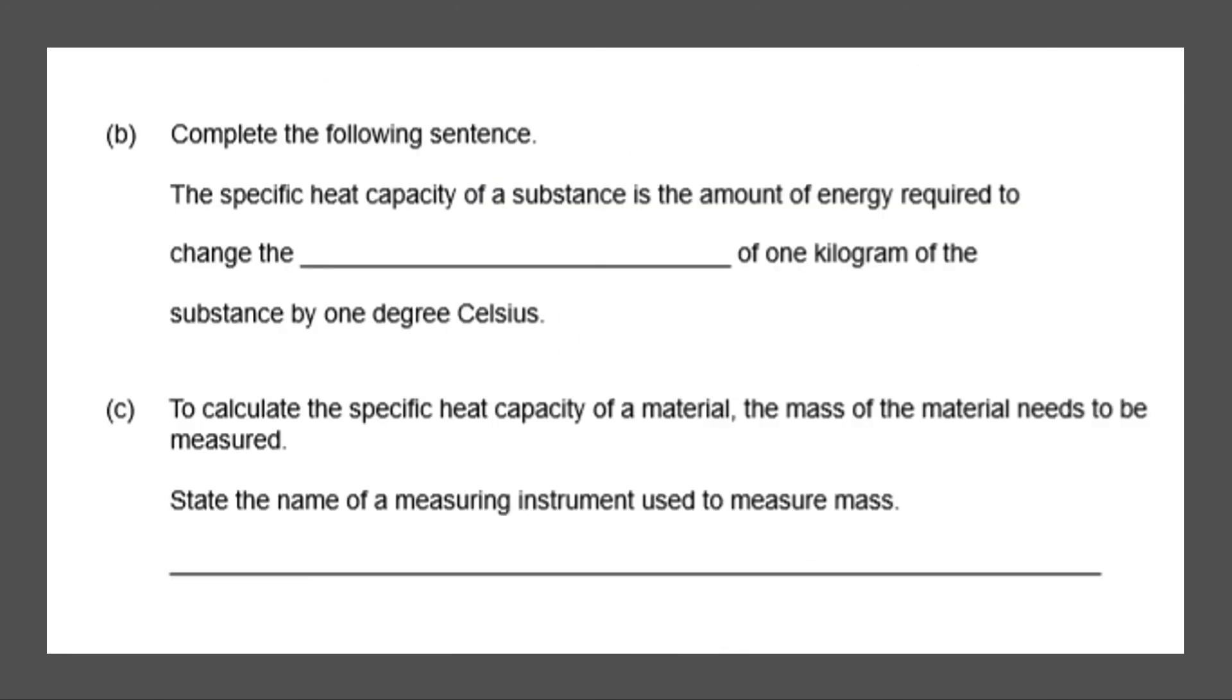Next question, last our last question. Complete the following sentence. The specific heat capacity of a substance is the amount of energy required to change the something of 1 kilogram of the substance by 1 degree Celsius. So this would be temperature. This is asking simply for the definition of specific heat capacity.